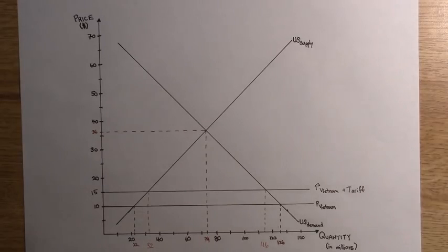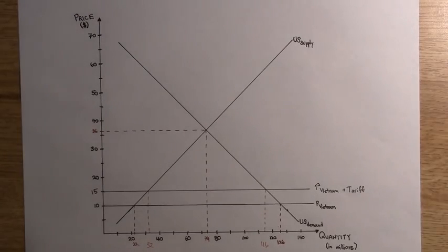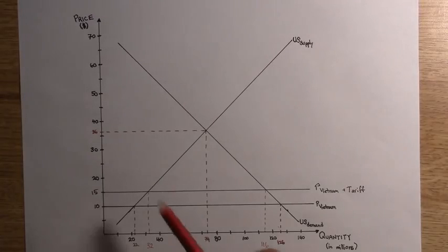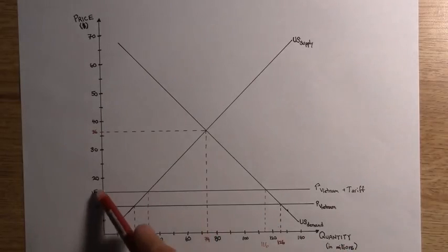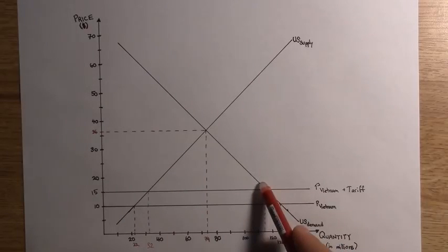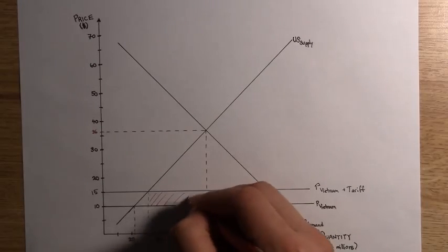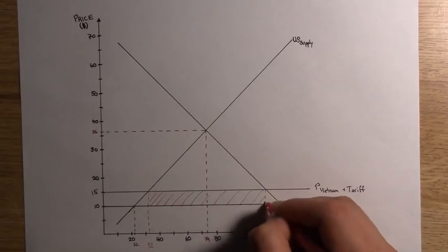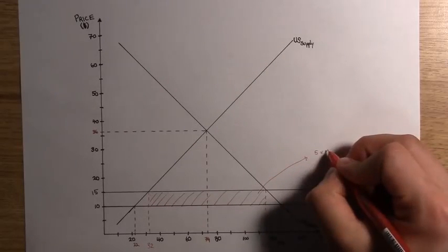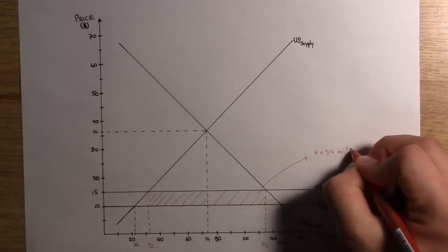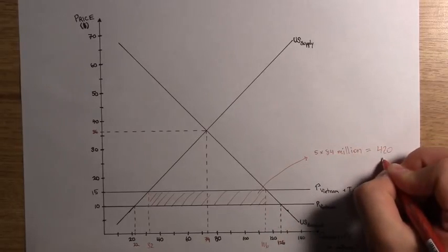There is one last element to tariff, and that is the government gains. Tariffs are taxes on imported goods, in this case, and this means that the U.S. government will earn money through tariffs. As we see here, Vietnamese imports amount to 84 million shirts, and with tariffs at 5 dollars a shirt, we see the U.S. government will be gaining 5 times 84 million, which amounts to 420 million dollars.